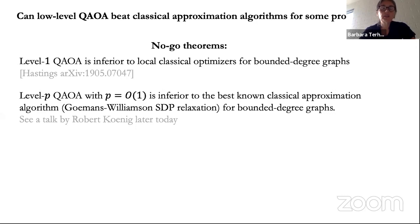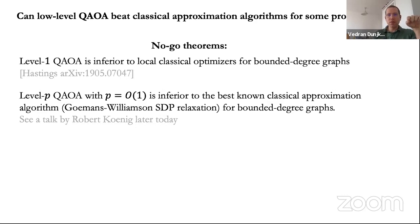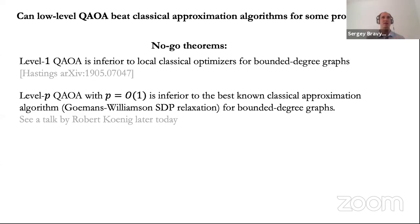Can I ask a question Sergei — the QAOA here, you're not assuming any spatial locality, right? No. Are there other questions? If I may — for the lower bounds for QAOA on bounded-degree graphs, the worst cases for QAOA and Goemans-Williamson are not the same, right? So can there be a subclass of bounded-degree graphs where QAOA still beats GW? I don't really know — I wouldn't be surprised if one can find such examples, but I have not tried. For more details, please come to the talk by Robert later today.